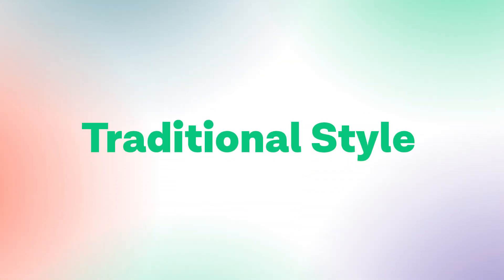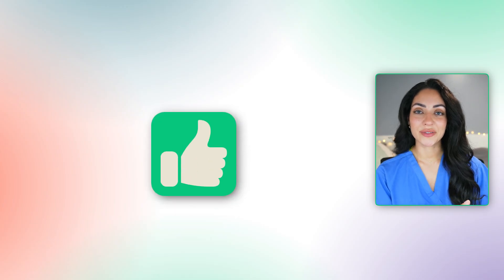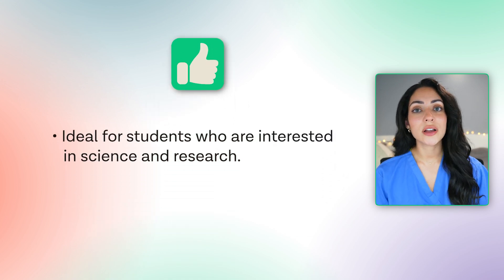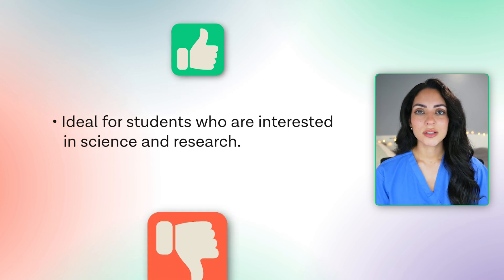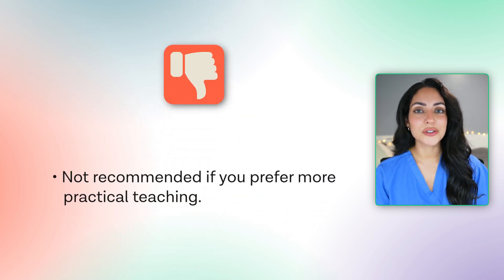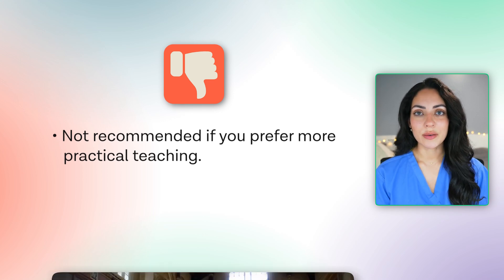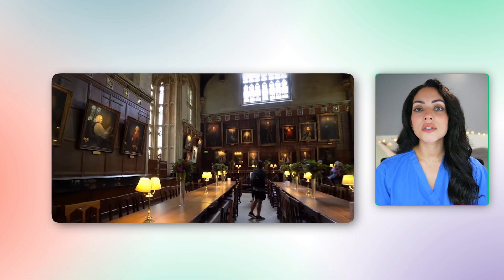Let's start off with traditional style. Traditional forms of teaching consist of learning about basic scientific principles and theories first before moving on to clinical cases and learning later on. The benefits are if you are really interested in science or research and want to learn about this first, then this teaching style might suit you. Some of the downsides are that if you enjoy practical teaching more, then other forms of teaching might be better for you. Some universities that use the traditional teaching style are Oxford and Cambridge.